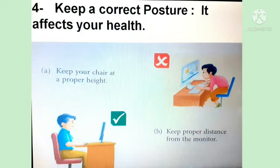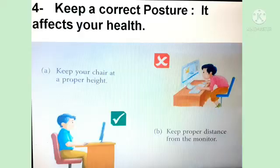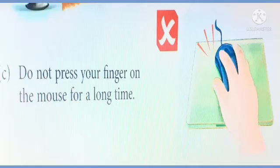Fourth point is: keep a correct posture, as it affects your health. Point A: keep your chair at a proper height, as shown in the given picture. Point B: keep a proper distance from the monitor — the boy in the picture is sitting straight and maintaining the proper distance from the monitor. Point C: do not press your finger on the mouse for a long time, as shown in the given picture.